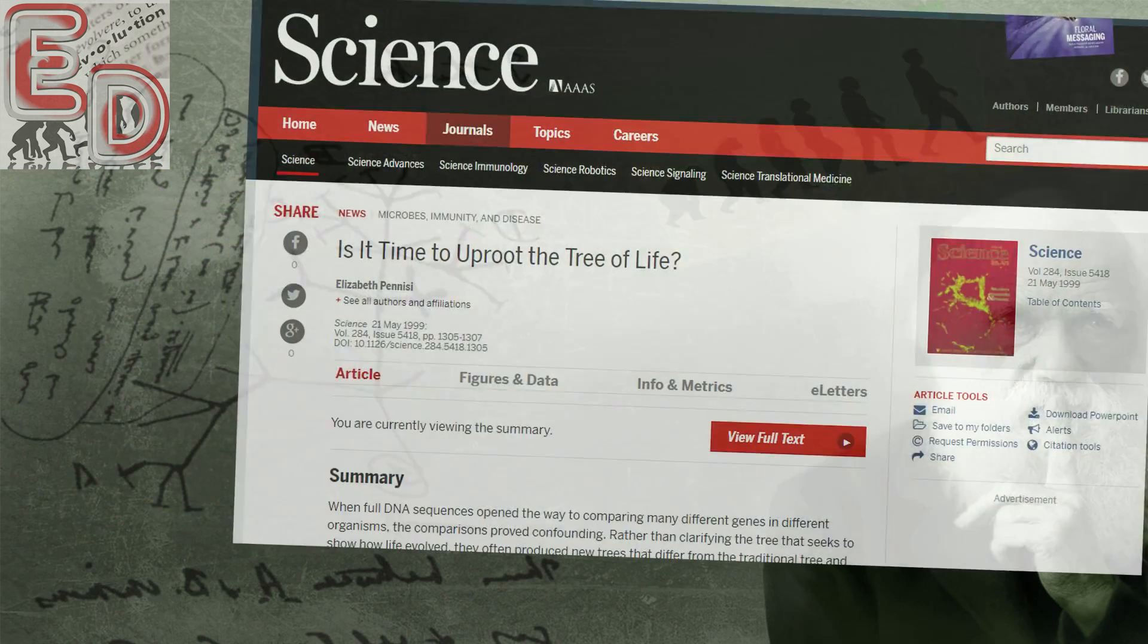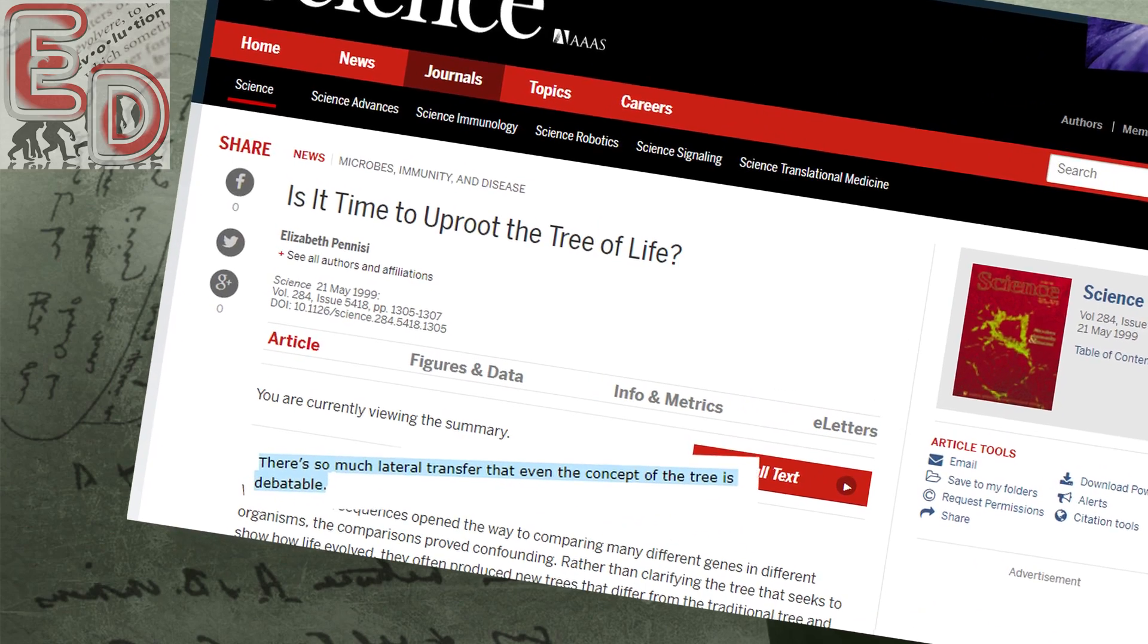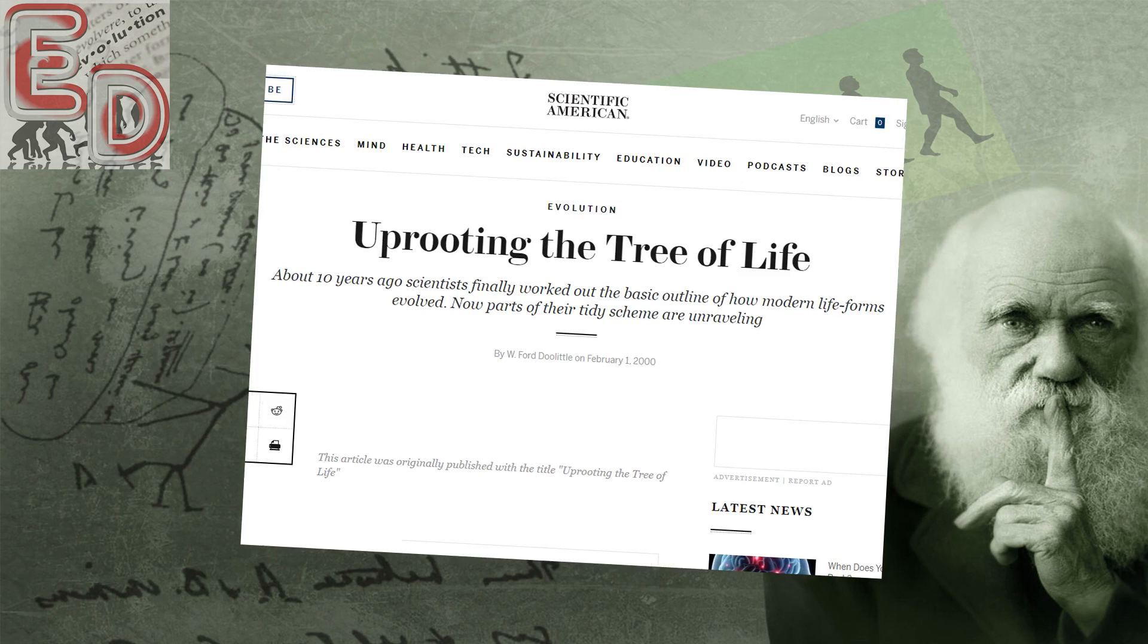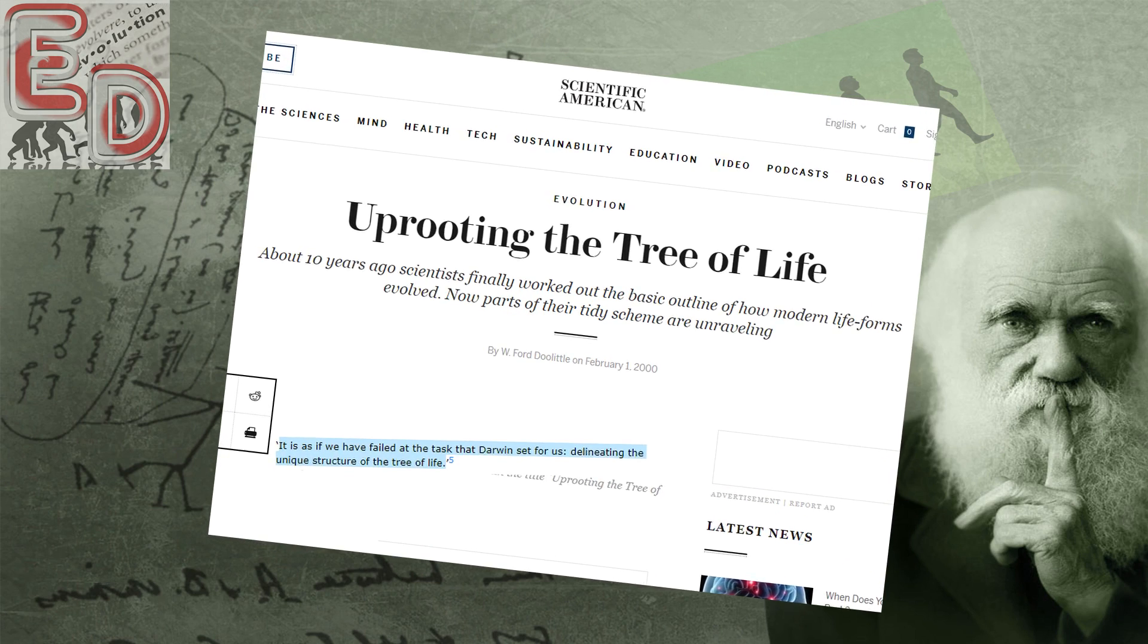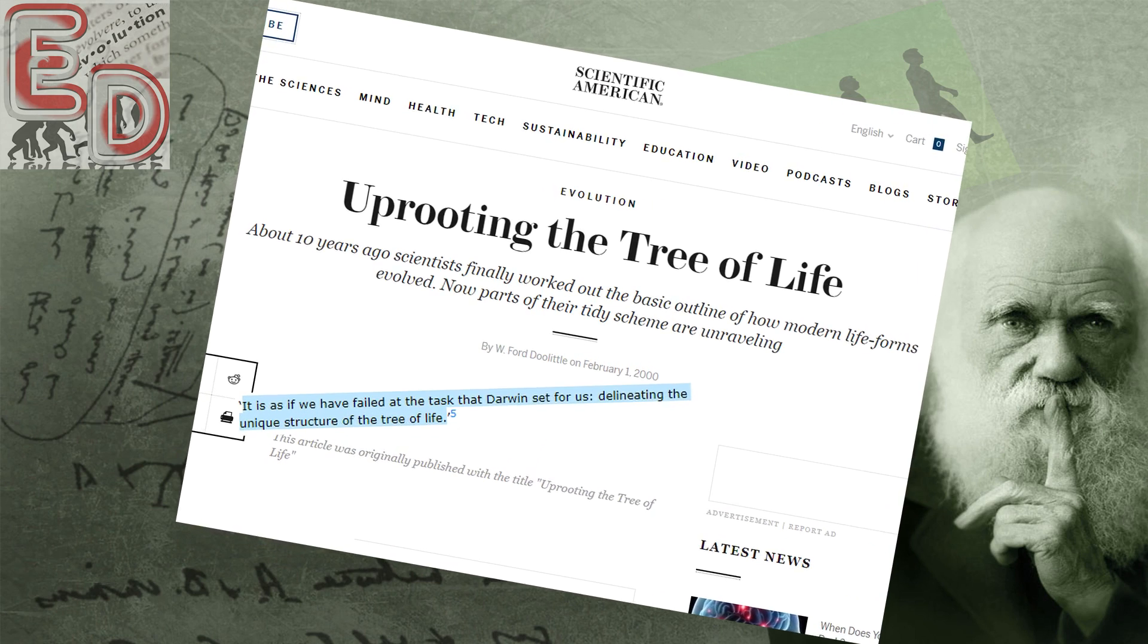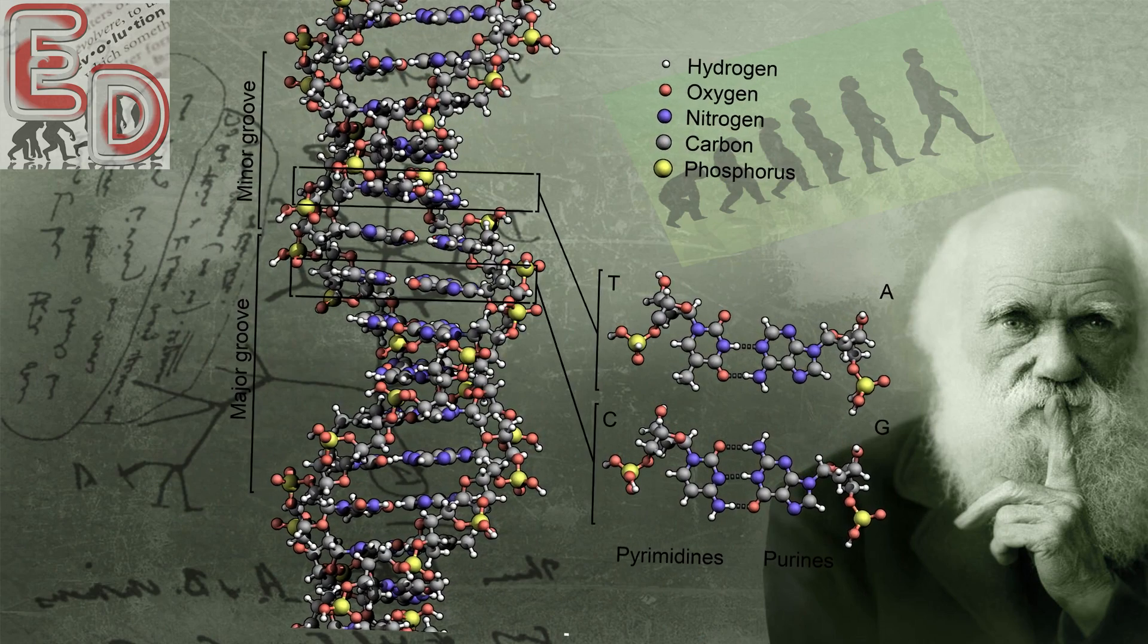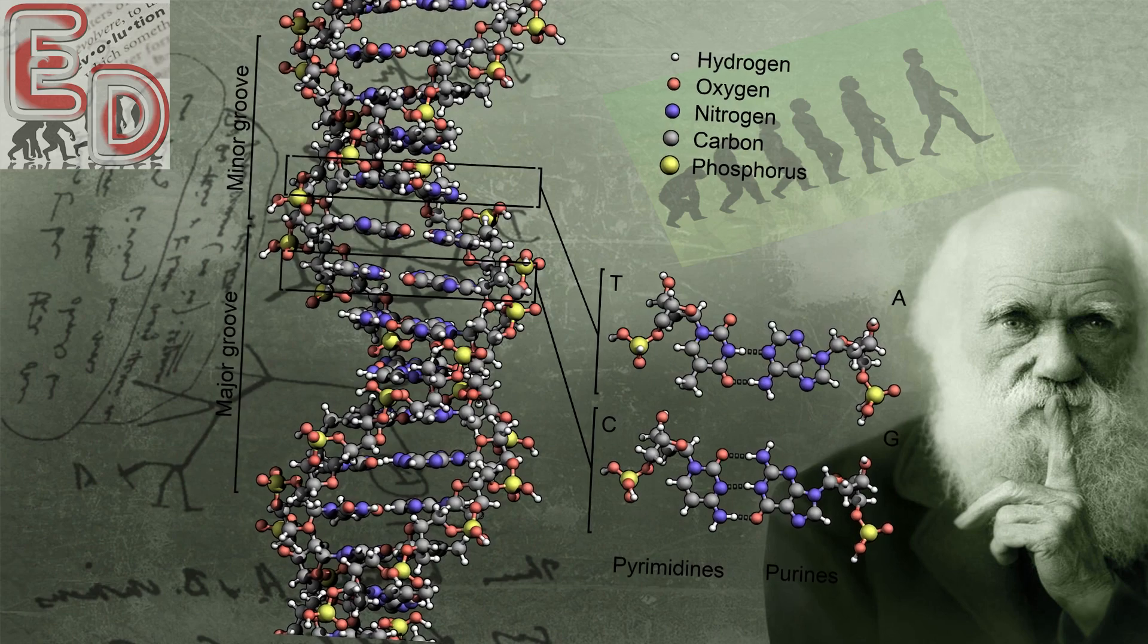Quoting the Journal of Science, there's so much lateral transfer that even the concept of the tree is debatable. Or, from Scientific American, it's as if we have failed at the task that Darwin set for us, delineating the unique structures of the tree of life. It seems Darwin's refutational evidence isn't as strong as he would lead us to believe.